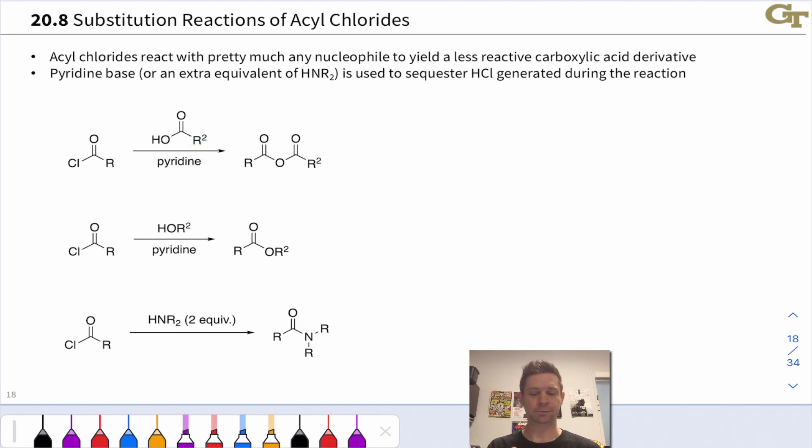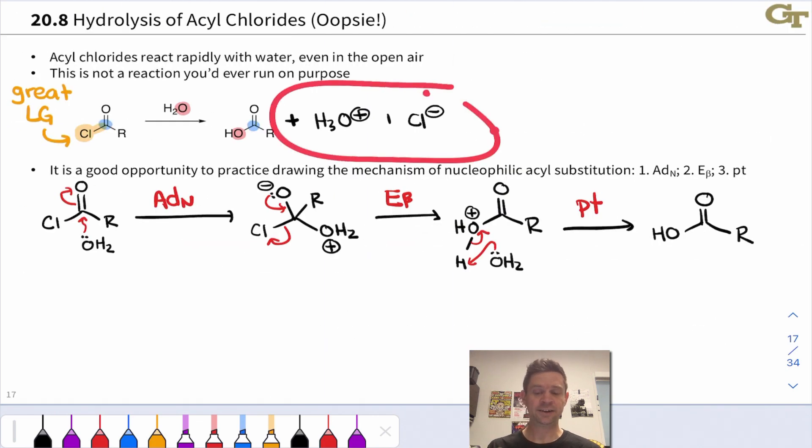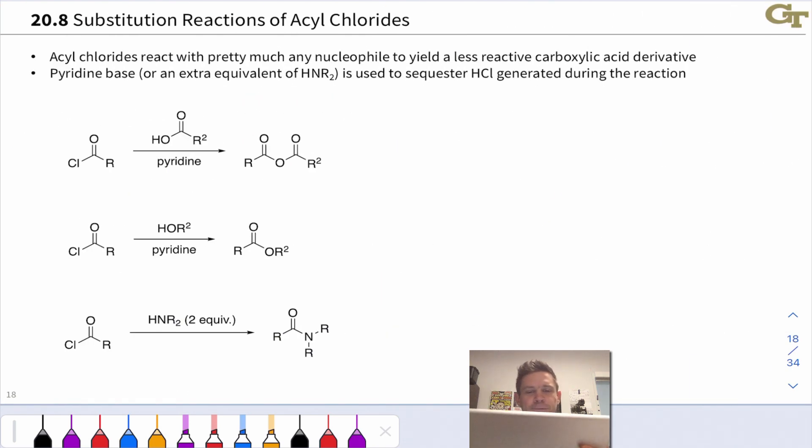Sometimes particularly for making amides we can use an extra equivalent of the amine nucleophile to act as a base something like HNR2 in general and this sequesters hydrochloric acid. Just like in the hydrolysis case we saw in the last slide HCl is generated and if we don't have a base around to mop up that HCl the H3O+ that's generated could do problematic things, problematic proton transfers.